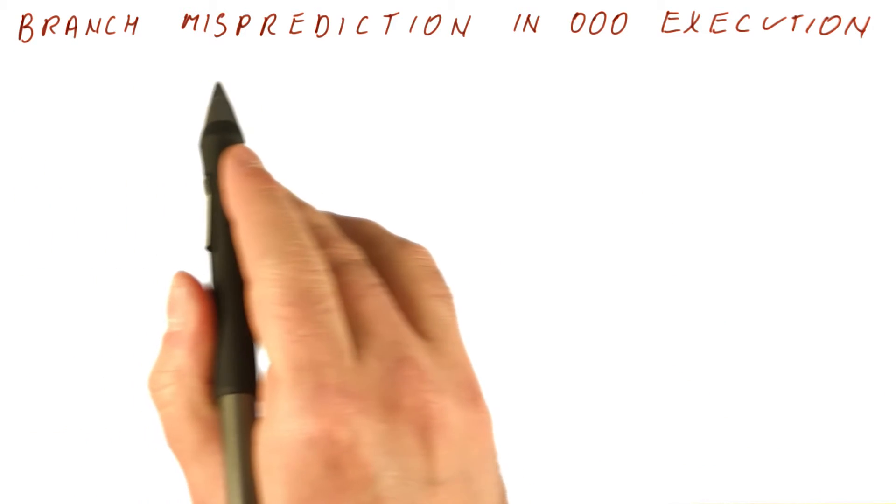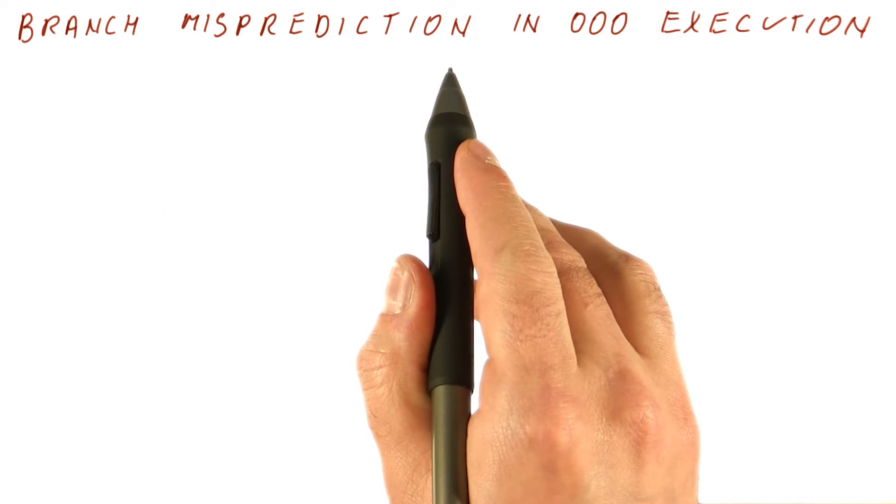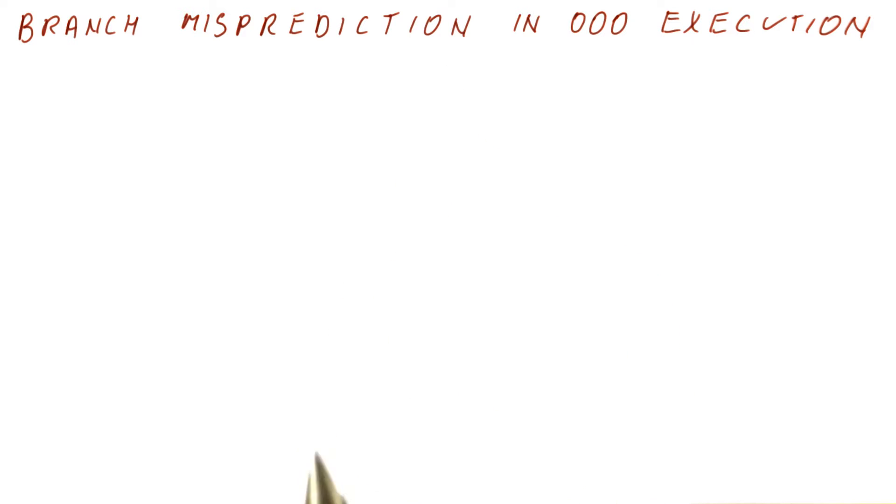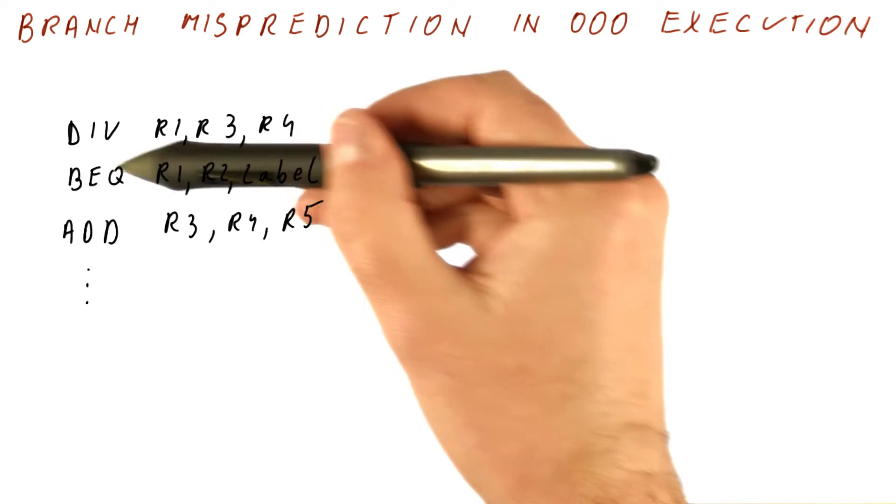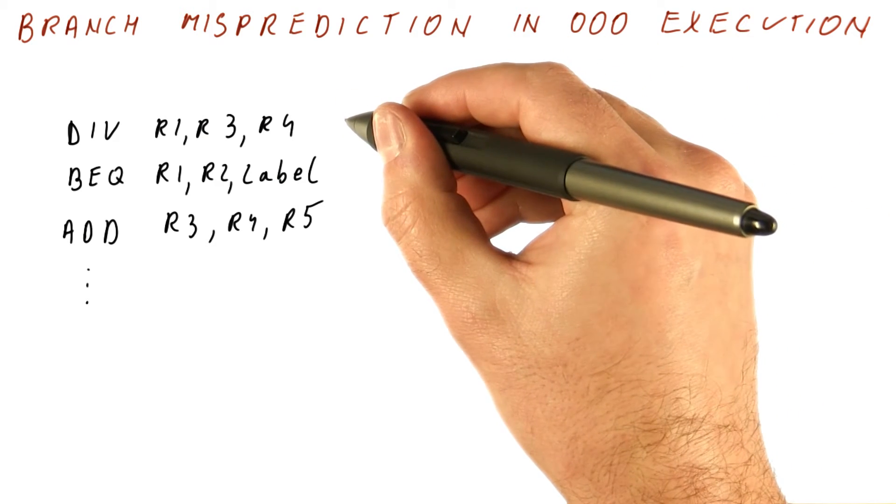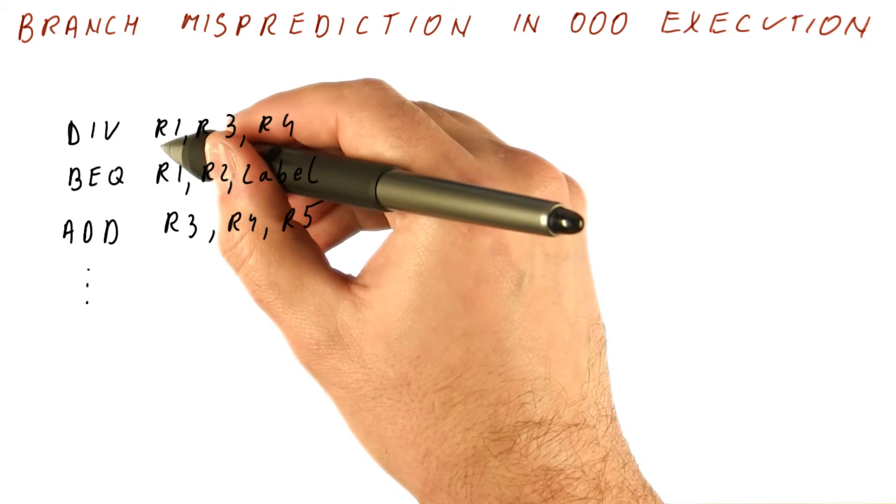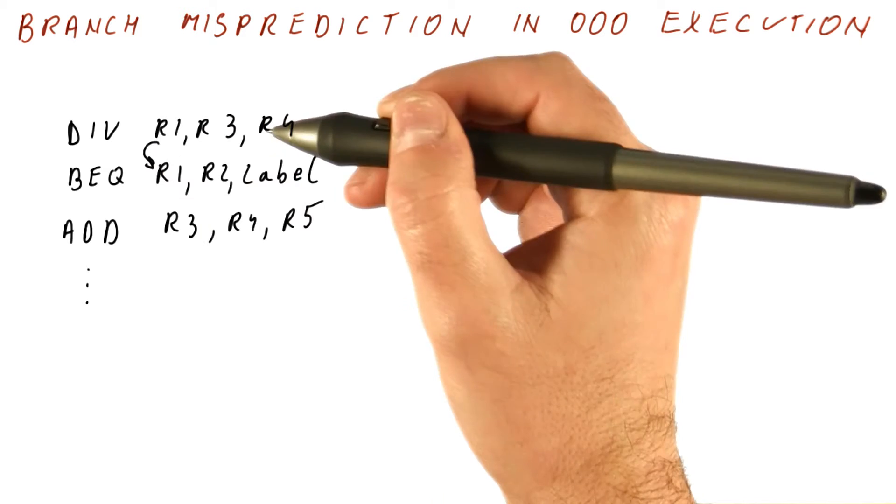Another thing that is a problem with Tomasulo's algorithm is when we try to do branch mispredictions. So how do we recover from a branch misprediction? Let's say we have a program like this, where we have a divide. It takes something like 40 cycles, and once we get that result, we can resolve this branch over here.